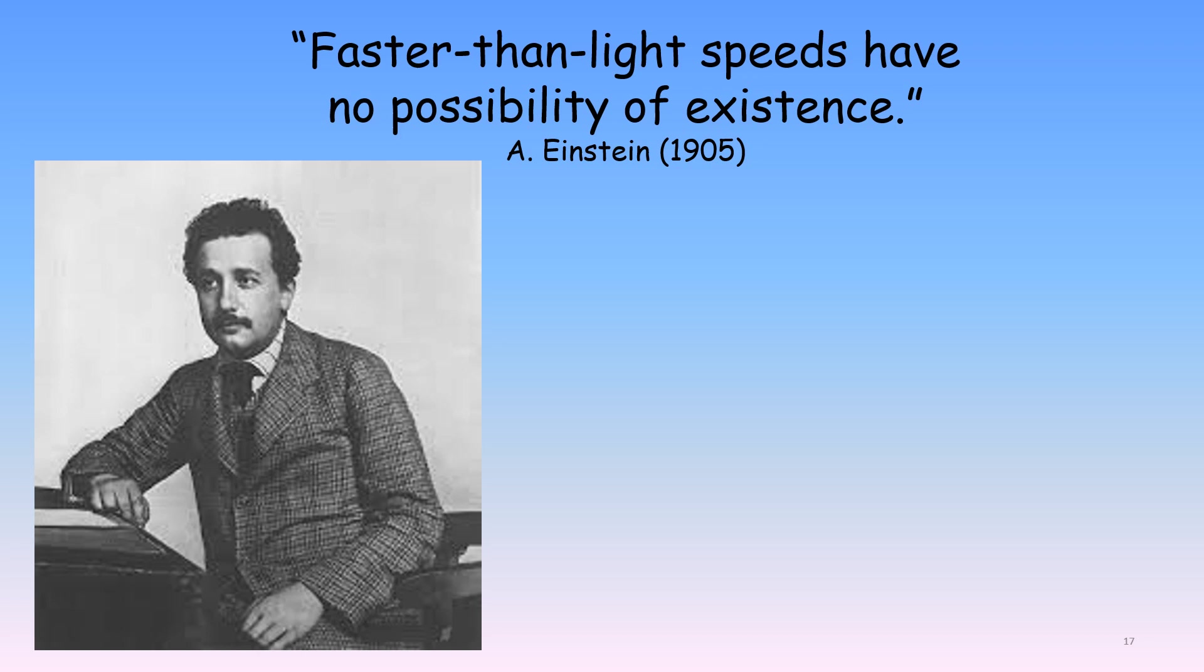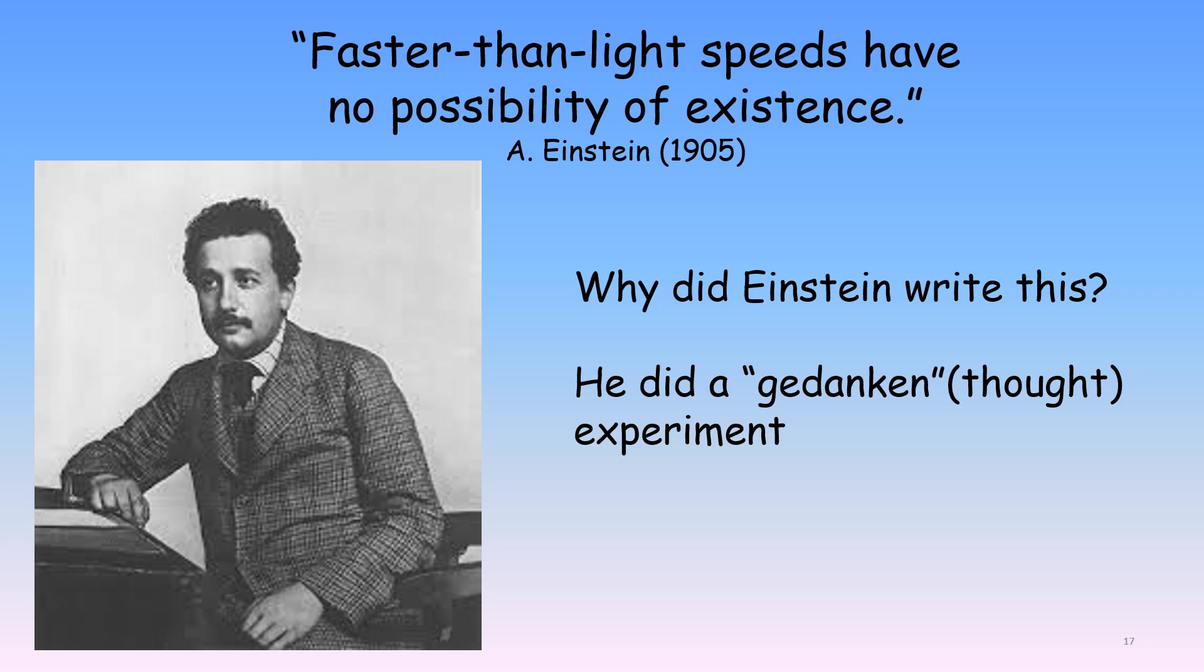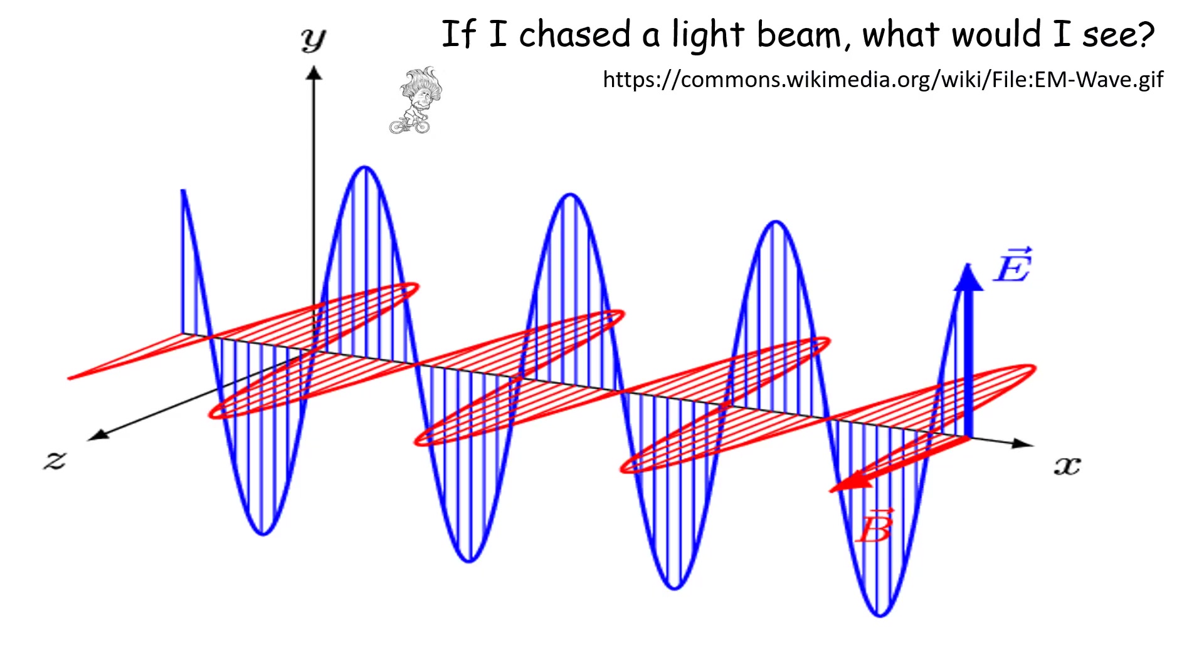Einstein, in his first 1905 relativity paper, wrote: Faster than light speeds have no possibility of existence. His prohibition of faster than light speed originated from an imagined experiment that Einstein thought of when he was only 16 years old. Einstein often did such gedanken or thought experiments to clarify his ideas.